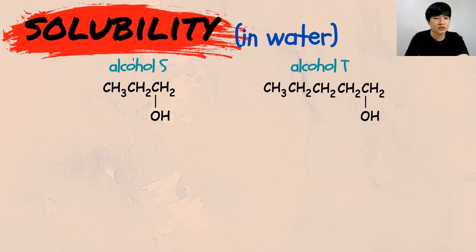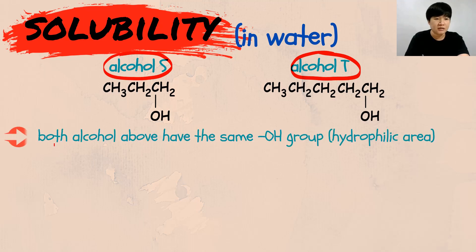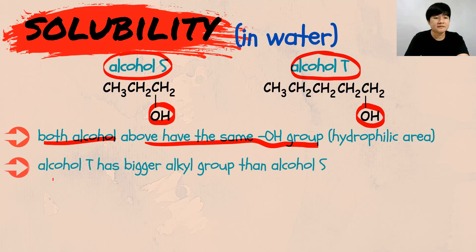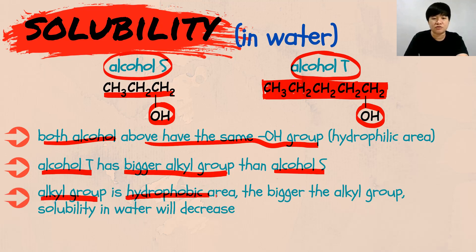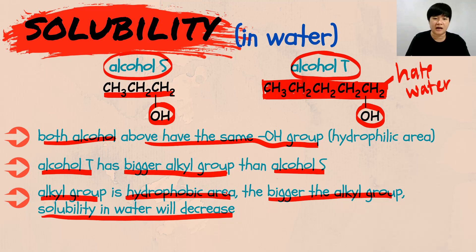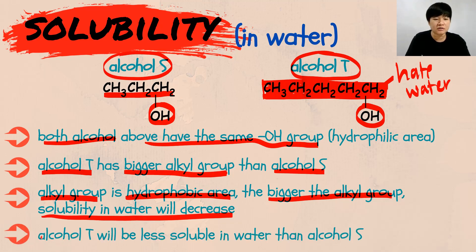Let's look at the full explanation for alcohol S and T. First, mention what is the same: both alcohols have the same number of OH groups — one each. Next, alcohol T has a bigger alkyl group than alcohol S — alcohol T clearly has a larger alkyl group. We know that the alkyl group is a hydrophobic area that doesn't like water. The bigger the alkyl group, the solubility in water decreases. As a result, alcohol T will be less soluble in water than alcohol S.